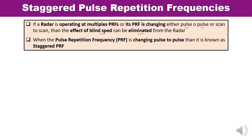We have discussed the effect of blind speed in the case of the MTI radar. Blind speed is a major drawback of the MTI radar — a serious problem. When the Doppler shift equals an integer multiple of the PRF, the delay line canceller not only eliminates the DC component caused by clutter, but it also rejects the moving target. The frequency response of the delay line canceller becomes zero at those points, which are treated as blind points. If multiple PRFs are utilized, the blind speed effect can be eliminated. When the PRF changes from pulse to pulse, it is known as staggered PRF.